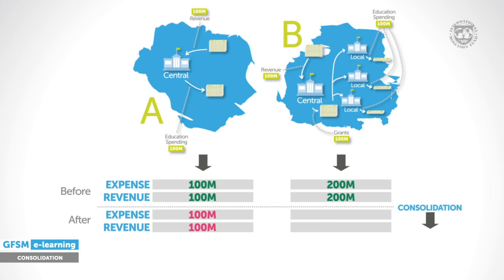In country B, the 100 million grant provided from central government to local government will appear twice in the data: first, as an expense payable by the central government, and secondly, as a revenue receivable by the local government. By removing both of these flows, total expense and revenue of the combined group will be reduced by 100 million. By consolidating, data comparison is improved between these two countries because consolidated government expense and revenue data only reflect interactions with the rest of the economy.